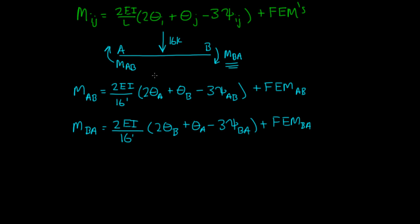Now we need to calculate the fixed end moment for AB. For a generic beam with a point load P in the middle, the fixed end moment on the left side is negative PL over 8. You can find this in charts or books, usually on the inside covers. The fixed end moment for the left side is negative, and on the right side is positive. So for BA, it's positive PL over 8.